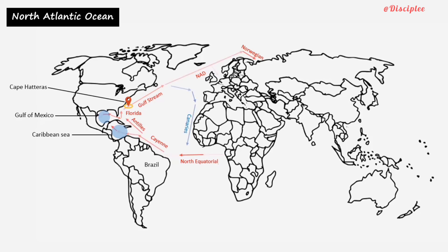Oceanographic research shows that almost two-thirds of the water brought by the Gulf Stream to the Arctic region is returned annually to the tropical latitudes by dense, cold polar water that creeps southwards to the ocean depth.